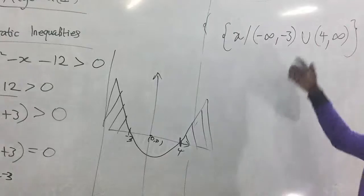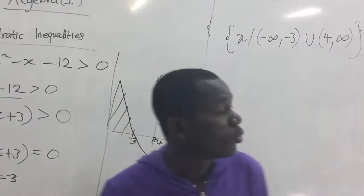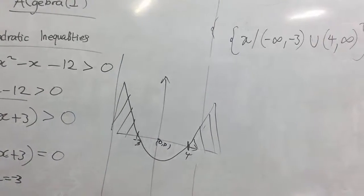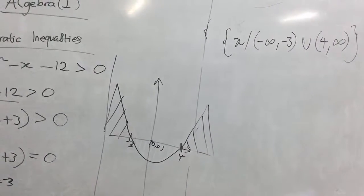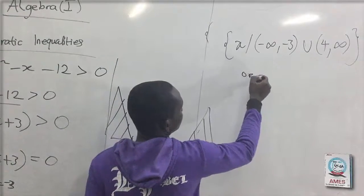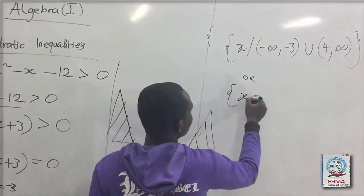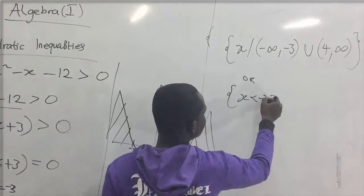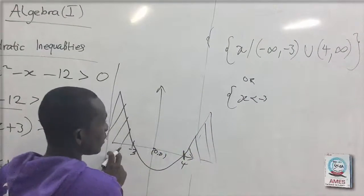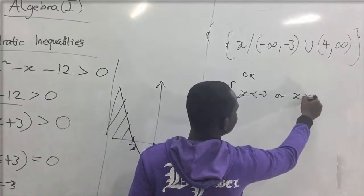So this is how we write our solution set in interval form. Now also try to write it in the simple form, that is writing it as, when we are coming down to it we use it, we have to turn on x which is less than negative three, okay, or x greater than four.